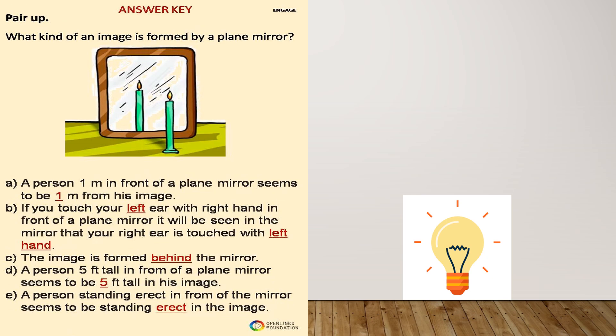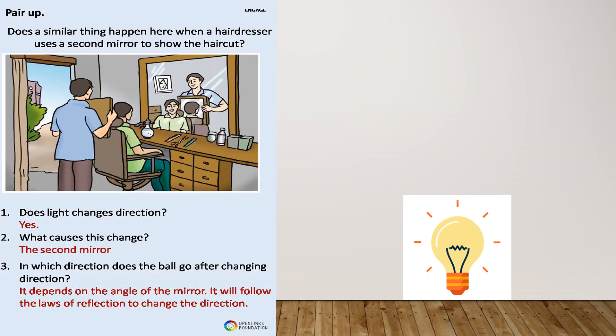When you go to a barber shop, there is a large mirror on the wall and the barber holds a small mirror to show the back of your haircut. The question is: does light change direction? Yes, light is changing direction. What causes the change? The second mirror causes the change. In which direction does the light go? It depends on the angle of the mirror, and it follows the laws of reflection.